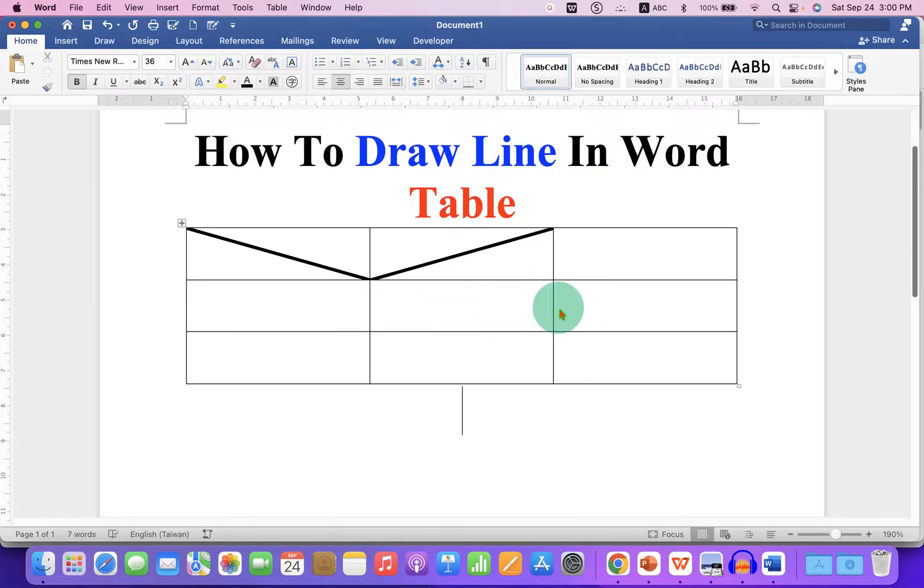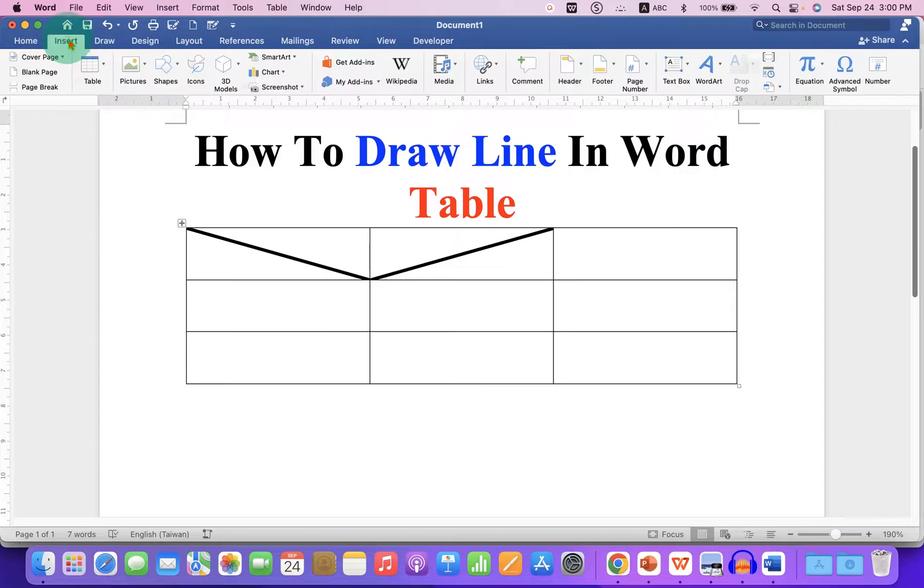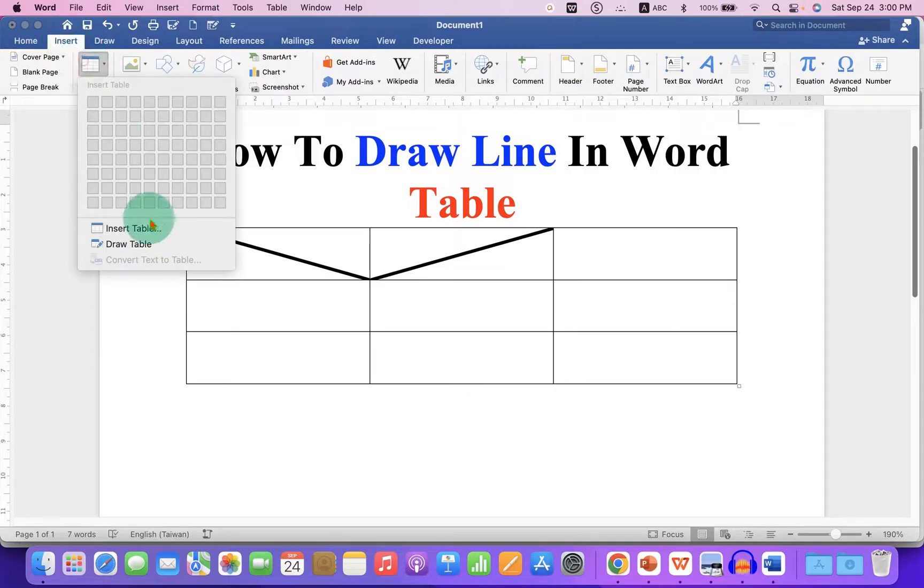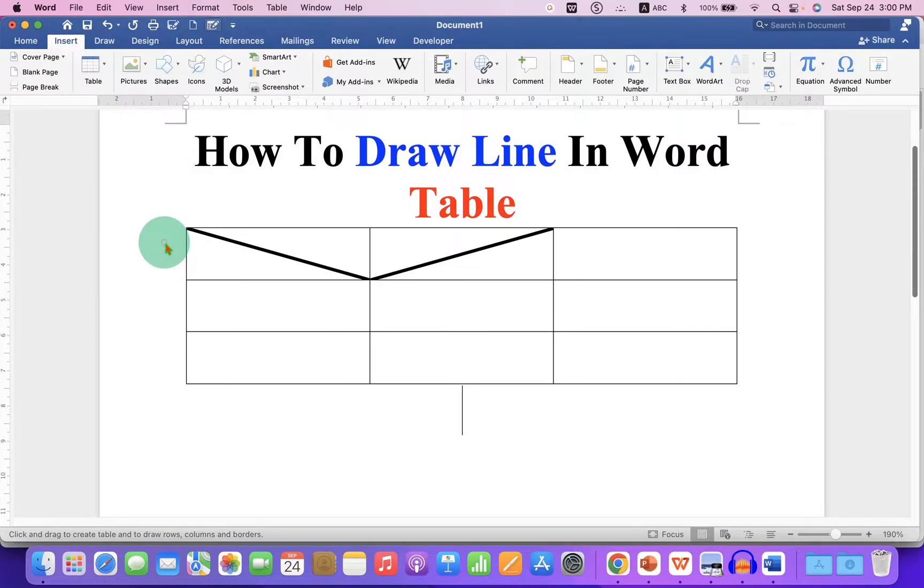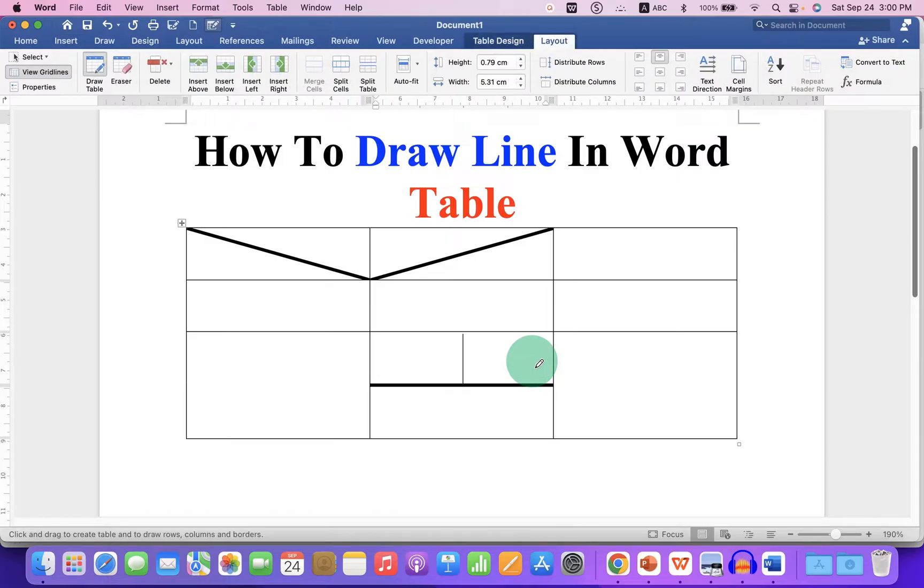And to draw a straight line, you need to go to the Insert tab and under the Table select Draw Table. Now you will see this pencil. You can just draw a line using the pencil inside the table cell.